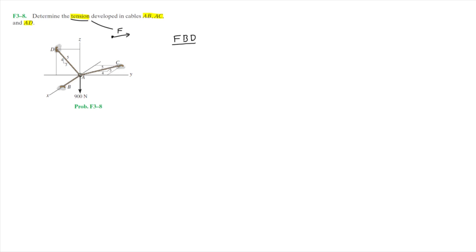As usual, by sketching out a free body diagram of the system, starting off with point A, we can go ahead and draw the tensile force AB, which is going to point outwards along the x direction.